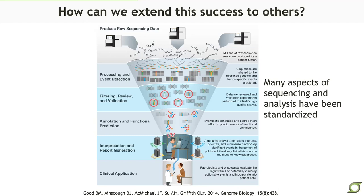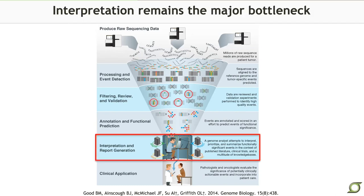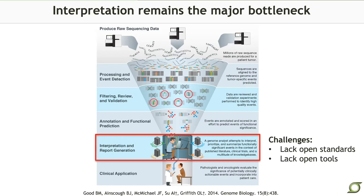What I'm showing here is a funnel diagram illustrating the overall process going from raw sequence data through different kinds of event detection, filtering, review, annotation, prediction, and ultimately report generation and clinical application. Many aspects of this process have been productionized, standardized, and automated. It's really in interpretation, report generation, and clinical application that a lot of bottlenecks remain. I'm going to talk about some of those bottlenecks or challenges. I'll highlight three that relate to the idea of open science: a lack of open standards, a lack of certain kinds of tools you need as a cancer genome analyst, and the problem of data siloing.